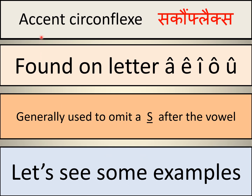The next accent is the accent circumflex. Where do we find it? On the letters a, e, i, o, u — all the vowels take the circumflex. It looks like a little hat or an inverted V. This is the symbol. Generally it is used to omit an S after a vowel. Let's see some examples — it will be more clear.